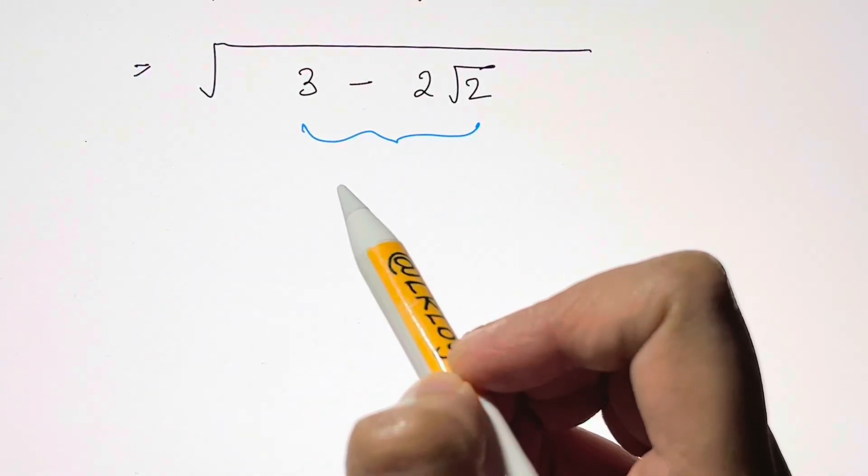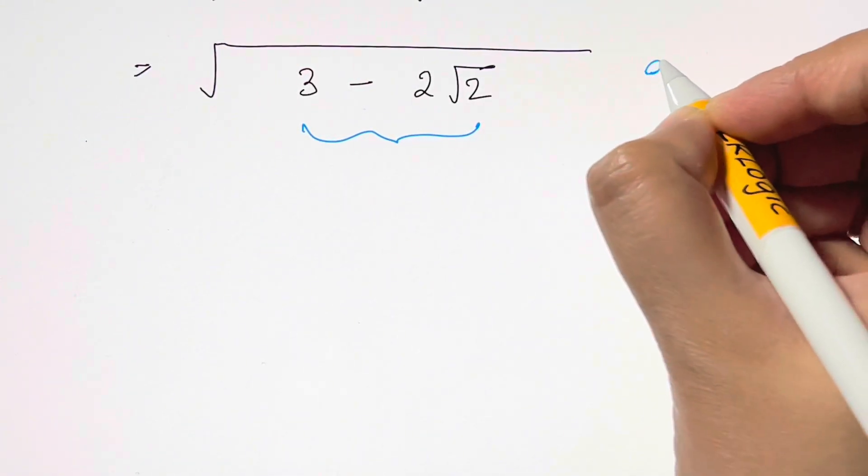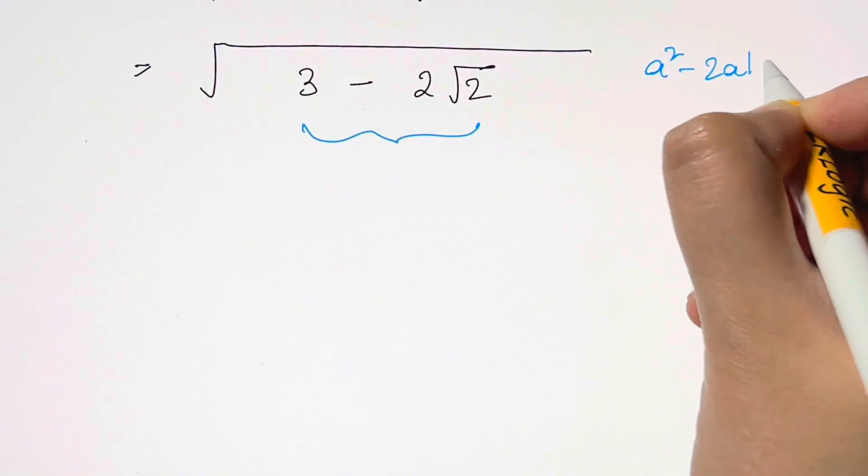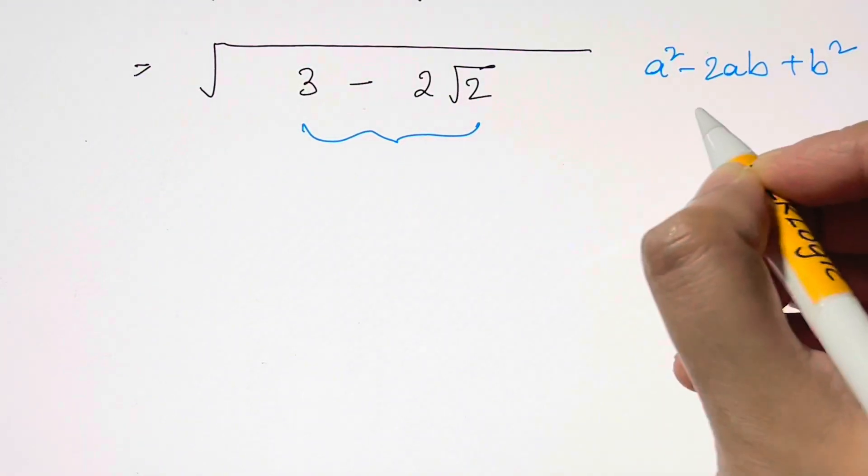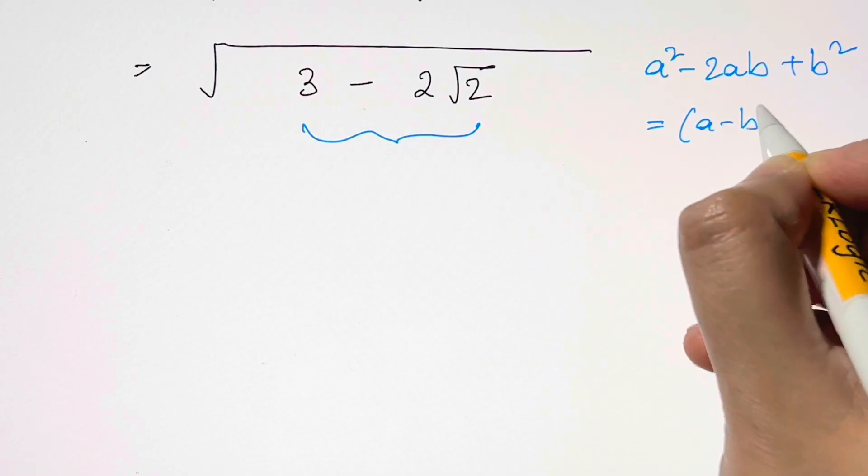Now this part we are going to rewrite it as a square minus 2ab plus b square, and that's equal to a minus b the whole square.